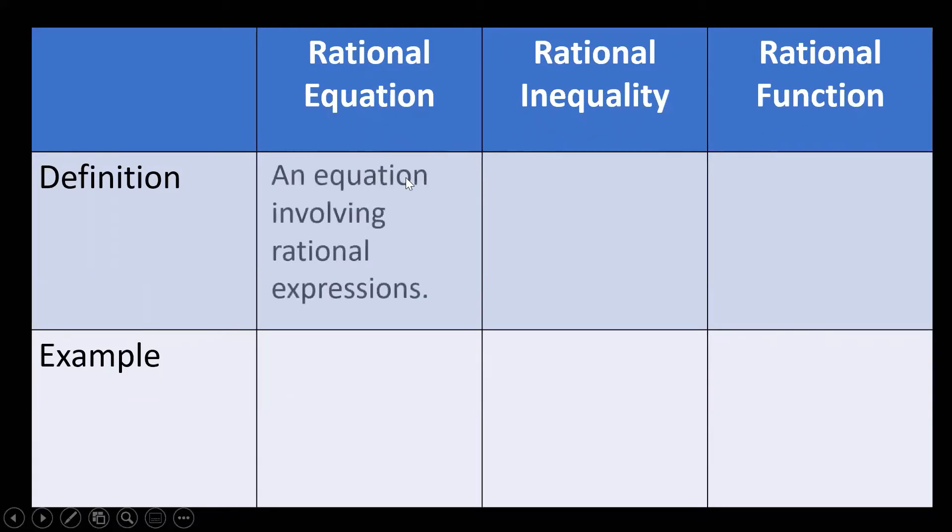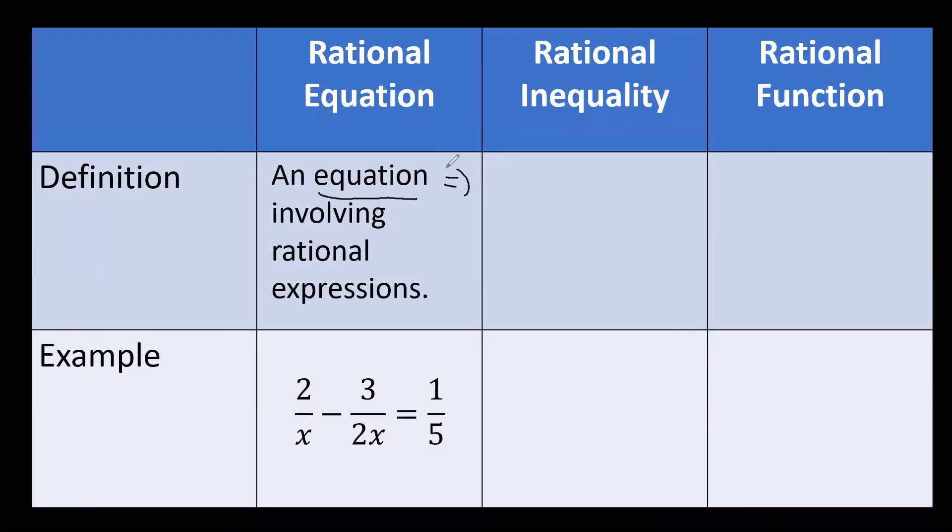Let's start with rational equations. A rational equation is an equation involving rational expressions. Example: 2/x minus 3/(2x) equals 1/5. So an equation has an equal sign and involves rational expressions. Here, we have these expressions: 2/x minus 3/(2x) equals 1/5.